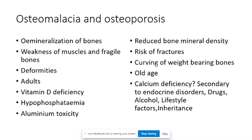Osteomalacia is simply demineralization of bone. Clinical symptoms include muscle weakness, fragile bones, and deformities. There is typically vitamin D deficiency or hypophosphatemia, and other causes include aluminum toxicity. Osteomalacia occurs in adults, whereas a similar pathology in children is rickets.